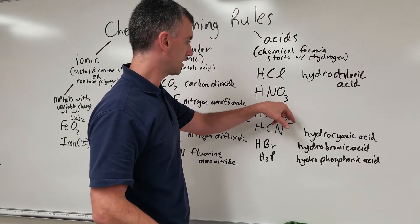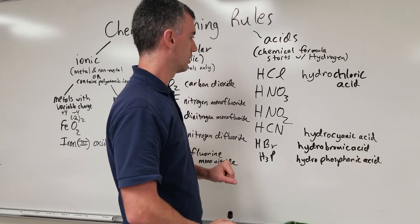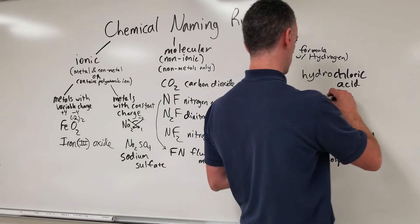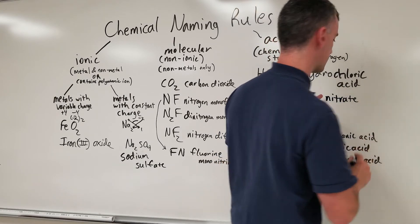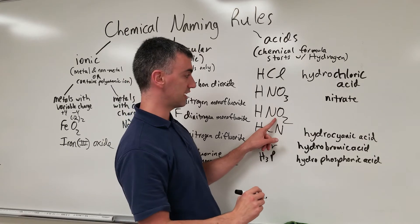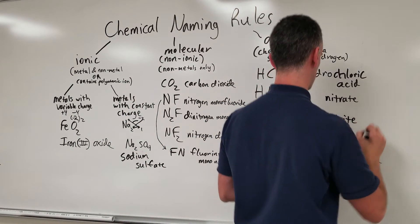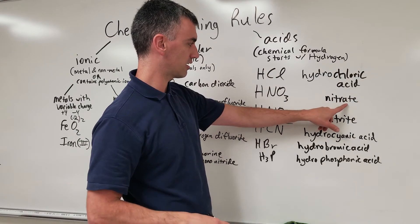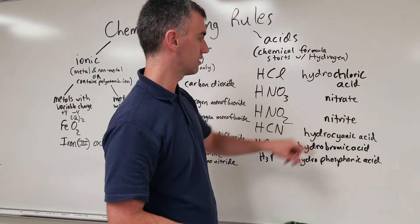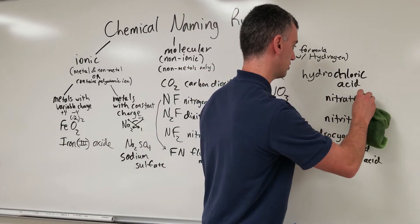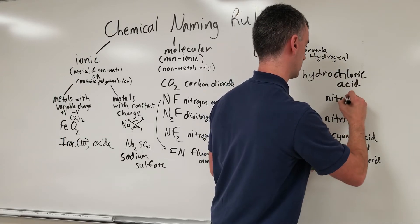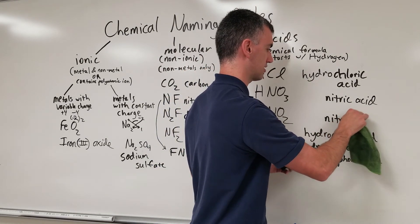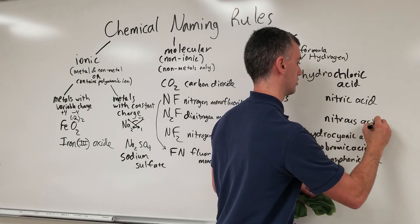On the other hand, if they do contain oxygen, they do not start with hydro. Instead, you look at the name of what's inside to determine how to call it. For example, this is nitrate. Obviously, that's not the name of the acid. I'm just showing you where it comes from. This polyatomic ion is nitrite, and what you do is you look at the name of the polyatomic ion, and that determines how you name the acid. Because this ends in -ate, it turns into nitric acid. Because this ends in -ite, it becomes nitrous acid.